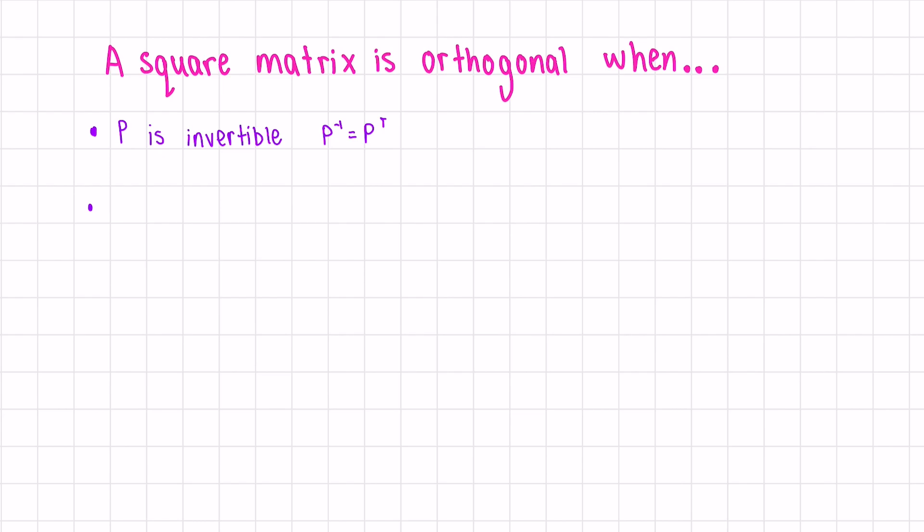The inverse is equal to the transpose. Or we could say that the rows of P are orthonormal. Orthogonal rows aren't enough. We need orthonormal rows, where the norm or the length is one, and the columns of P are also orthonormal.